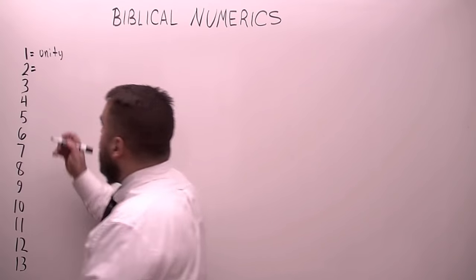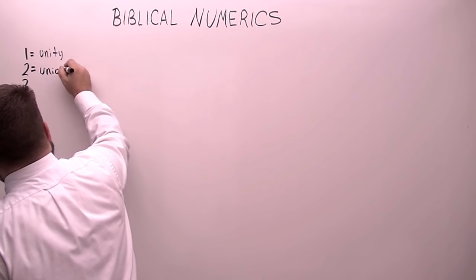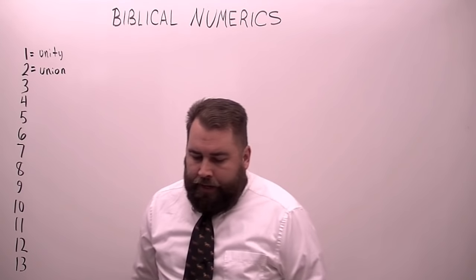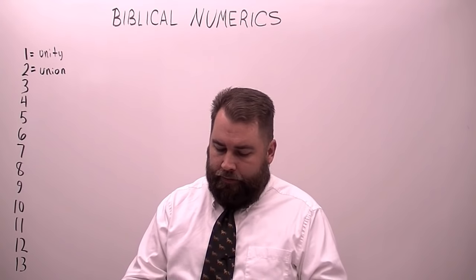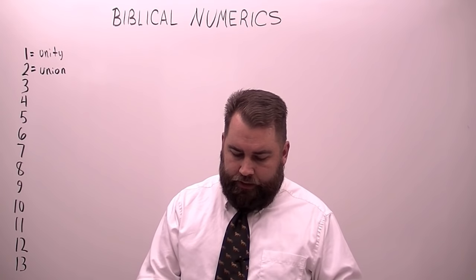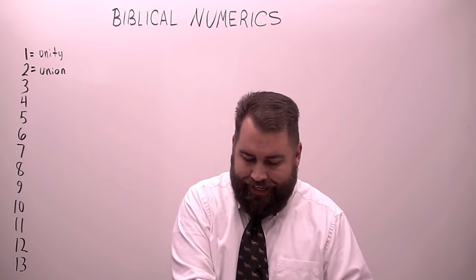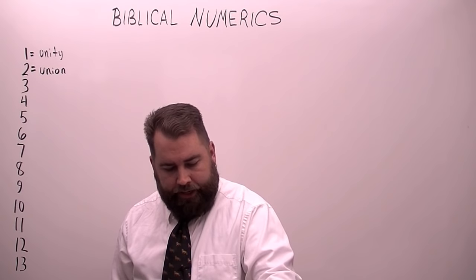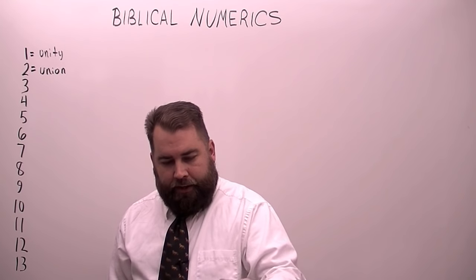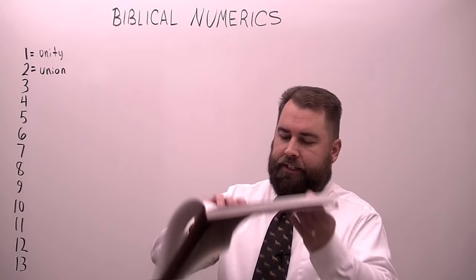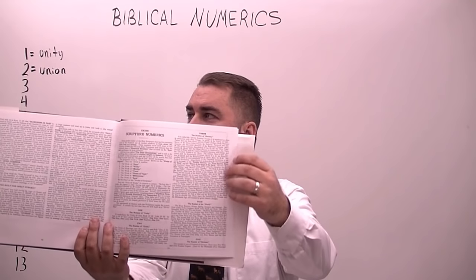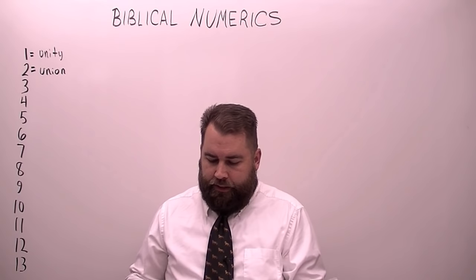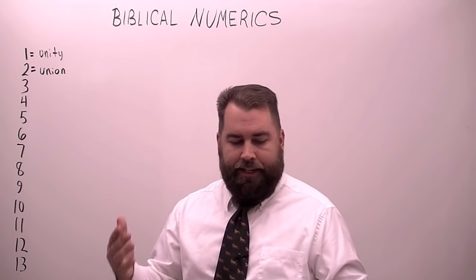Two is the number of union — two things coming together as one, such as the union of marriage: two shall be called one flesh; the union of Christ and the church; the reunion of the two natures of Jesus. Larkin has some interesting things here. So one and two are the simple basic ones.